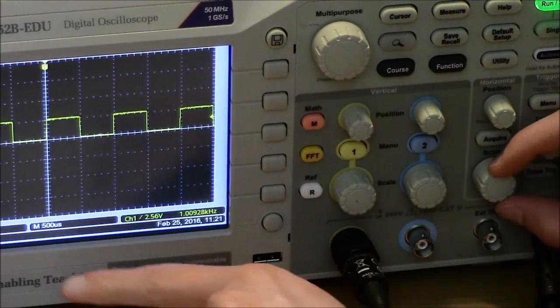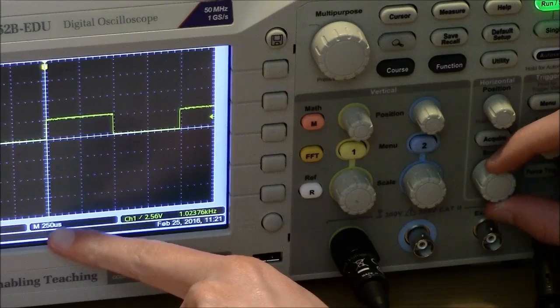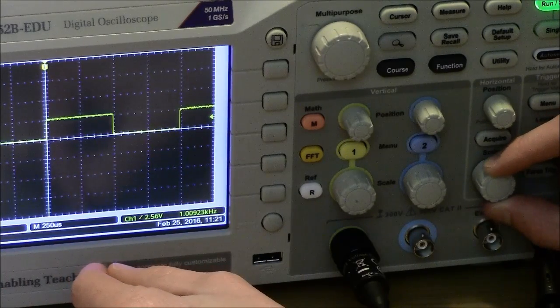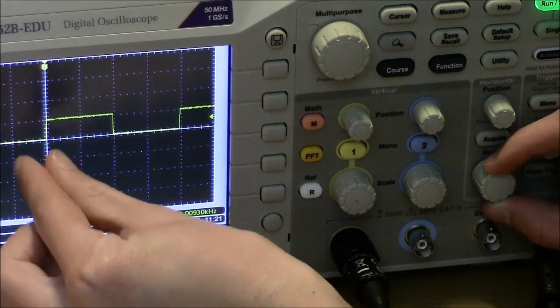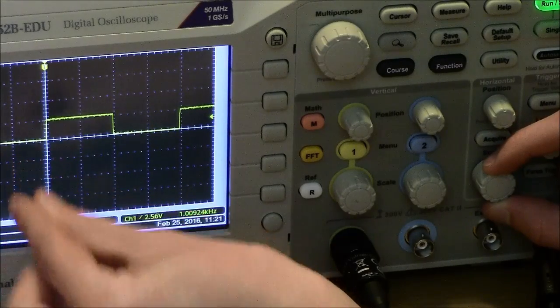As I turn this knob, you'll notice that this number changes as the width sensitivity changes. And this represents the amount of time that one of these divisions represents.